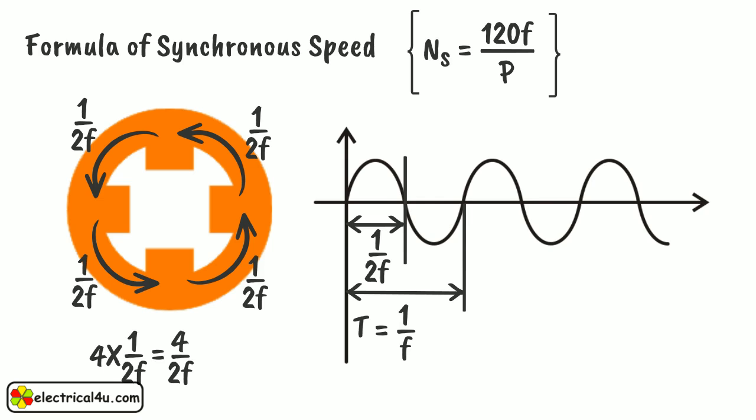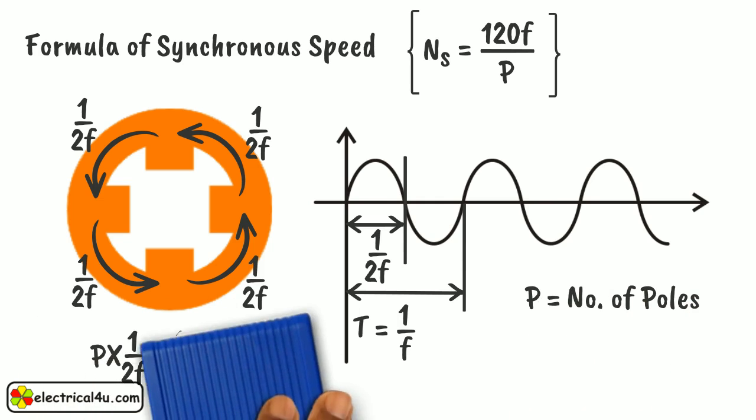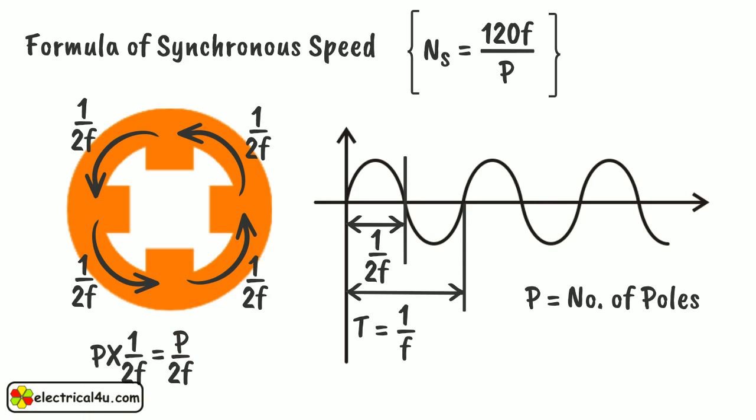Similarly, we can prove that if there are p number of poles in the system, the magnetic field takes p by 2f seconds to complete the entire 360-degree rotation. That means in p by 2f seconds, it revolves one revolution. Therefore, in 1 second, it revolves 2f by p revolutions.